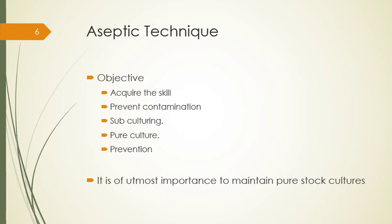Proper aseptic technique prevents contamination of cultures from foreign bacteria inherent in the environment — for example, airborne microorganisms including fungi, microbes picked up from the researcher's body, the lab bench top, or other surfaces, microbes found in dust, as well as microbes found on unsterilized glassware and equipment. These may potentially contaminate cultures by interfering with lab results. Use of proper aseptic technique can greatly minimize or even eliminate the risk of contamination.